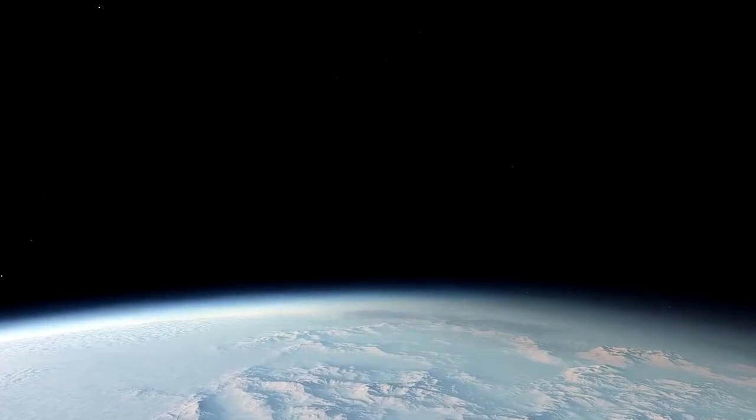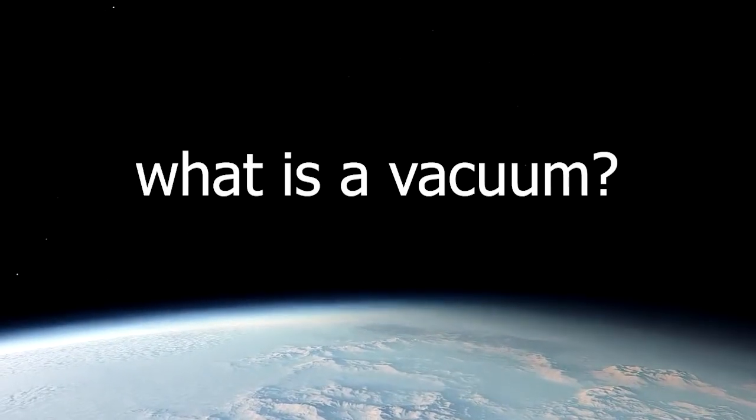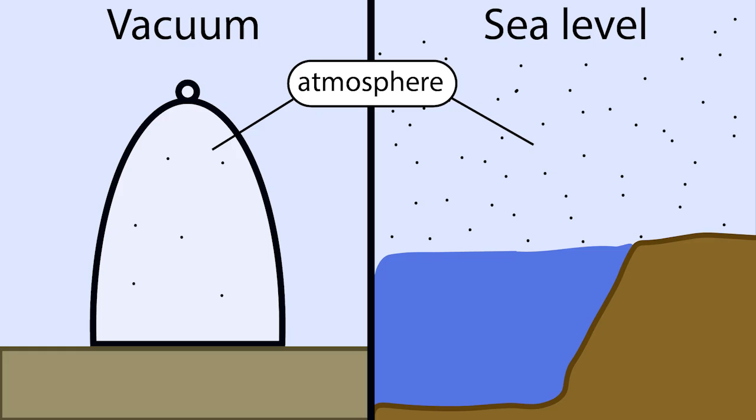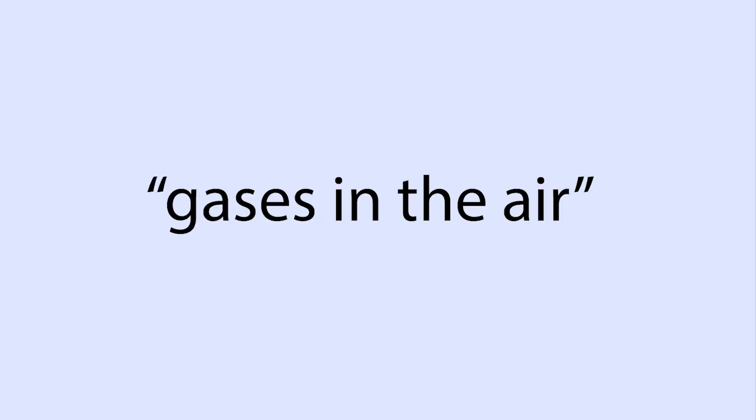Space is a perfect vacuum because it's void of an atmosphere. But what is a vacuum? A vacuum is an environment where there is less atmosphere than the atmosphere measured on Earth at sea level. Atmosphere is a scientific way of saying gas is in the air.